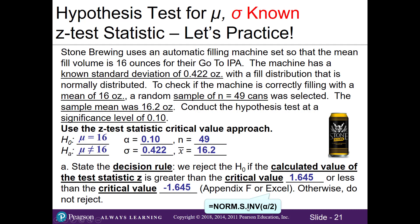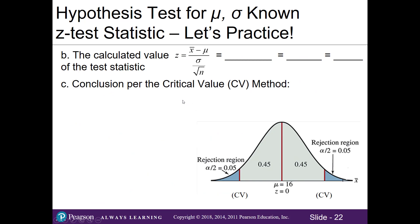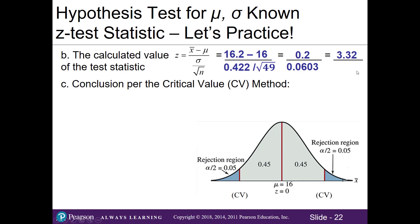For Part B, we calculate the Z test statistic by converting our sample mean of 16.2 into a Z value. The formula is: (16.2 - 16) divided by (0.422 / √49). The sampling error on top is 0.2 and the standard error on the bottom is 0.0603. Dividing gives a test statistic of Z = 3.32.